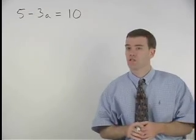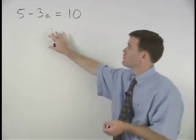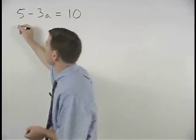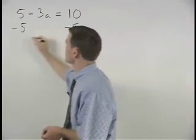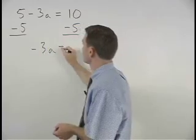To solve this equation, 5 minus 3a equals 10, we first subtract 5 from both sides to get negative 3a equals 5.